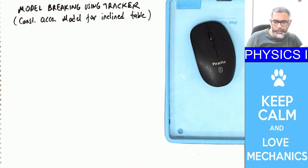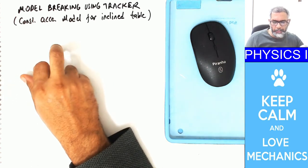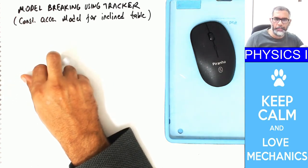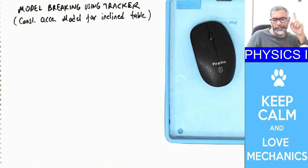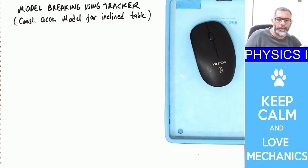In this video, I will do a model breaking application for a card moving on an inclined table in one dimension. If you are not familiar with the modeling, please see this video for reference. In model breaking, we are using a particular model — in this example the constant acceleration model — for a card moving on an inclined line.